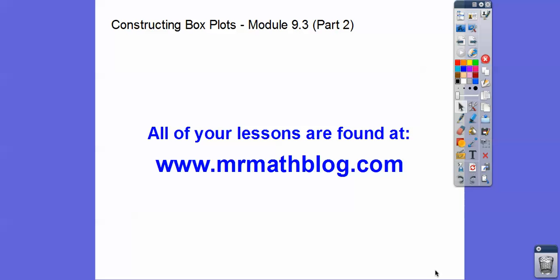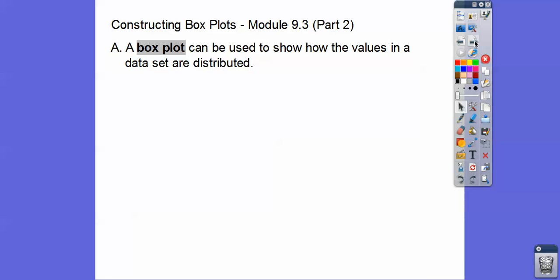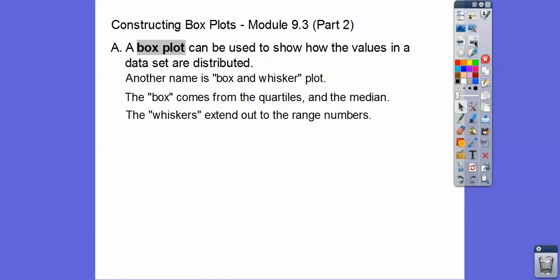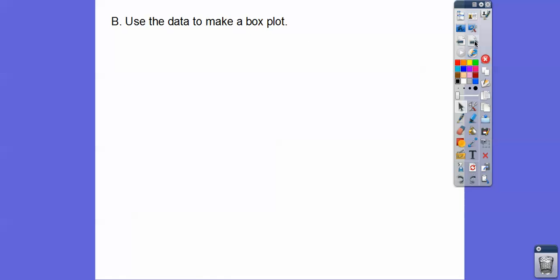Hey, everybody. This lesson is the second part of Module 9-3, Constructing Box Plots. Some textbooks call them box and whisker plots. A box plot can be used to show how the values in a data set are distributed. The box comes from the quartiles, Q1 and Q3, and the median. The whiskers extend out to the range numbers, the minimum and maximum.